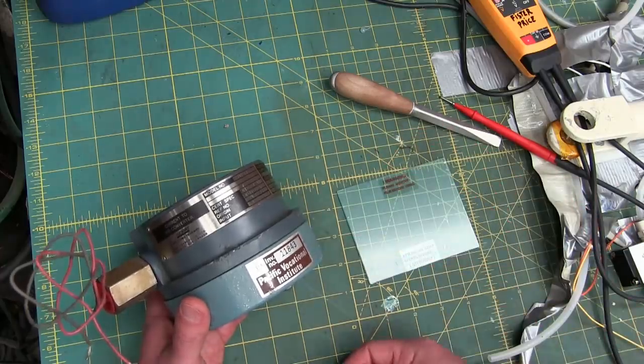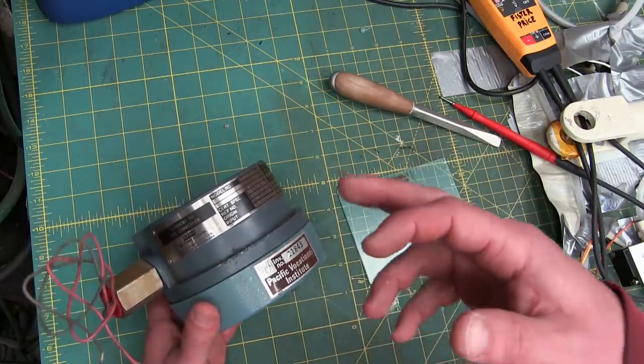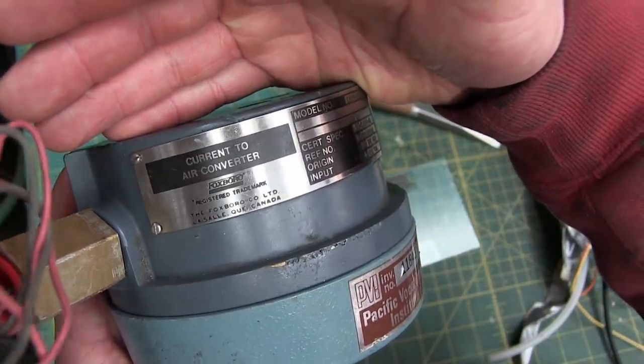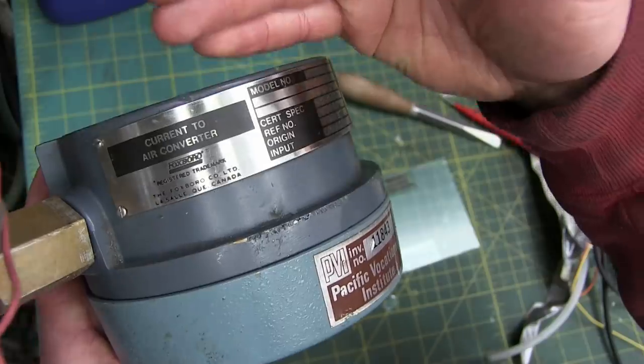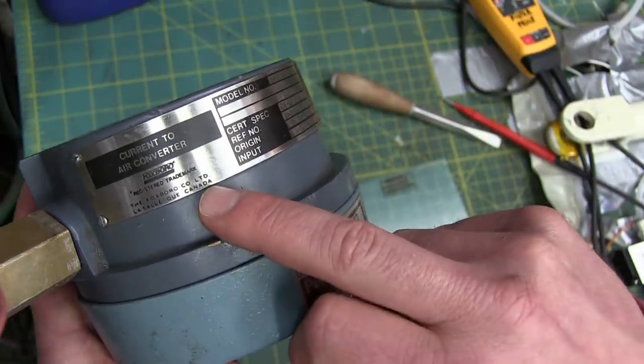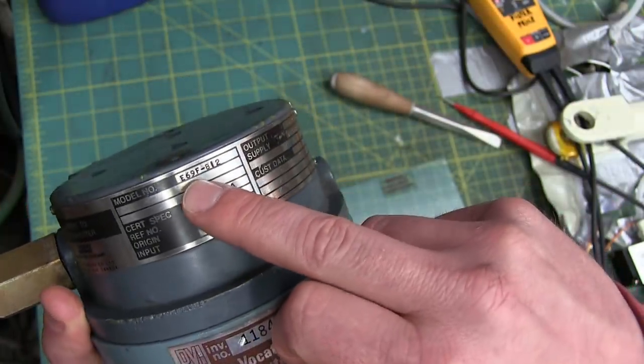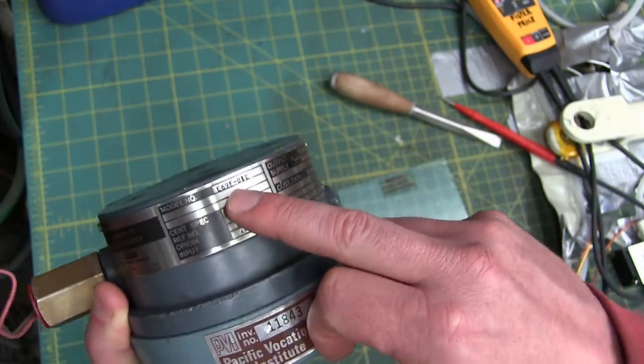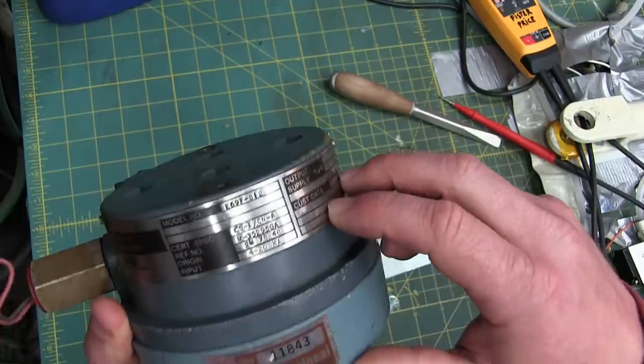They also own Square D. So they're huge in automation. In this bygone age, the Foxborough Company Limited, LaSalle, Quebec, Canada, model E69. What comes after 69? Mouthwash.